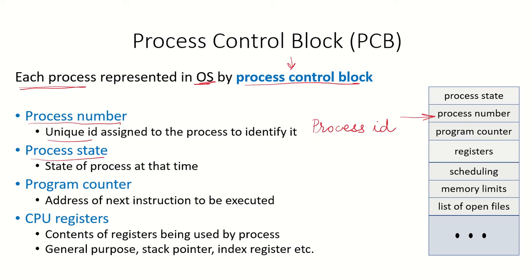The state of the process at that moment in time is also stored in the PCB. Since the process is a program in execution, it may be present in a particular state — it may be in the ready state, the running state, the wait state, or the terminated state. So the state of the process is also maintained in the process control block.